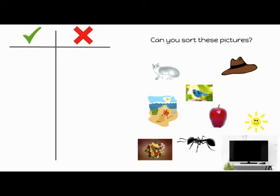Let's have a look. Can you go and get a piece of paper and a pencil? You can pause the video while you go and do this. Awesome. Now that you've got your pencil and piece of paper, can you please draw a chart like my one here? You can see my cursor going over it now. Then can you draw a tick on one side and a cross on the other? We're going to sort some of these pictures into the right columns. In the column with a tick, can you please put the words that have an eh sound in them? Remember, this could be at the beginning, middle, or end. In the cross column, you're going to put all of the words that don't have any eh sounds in them.